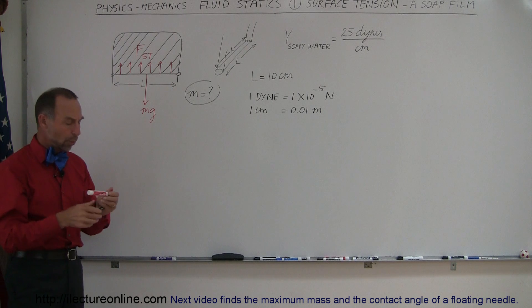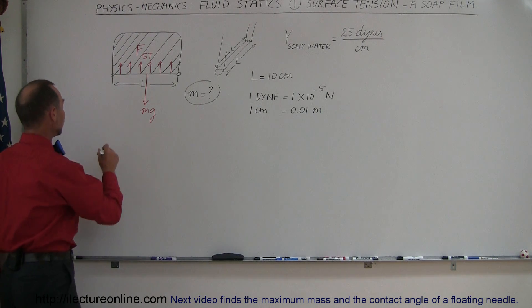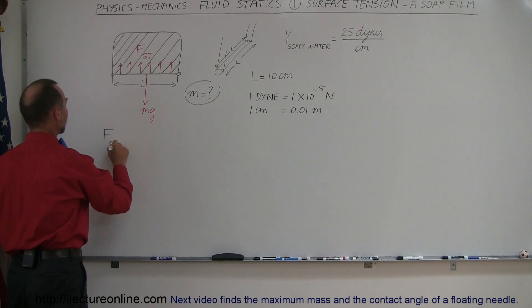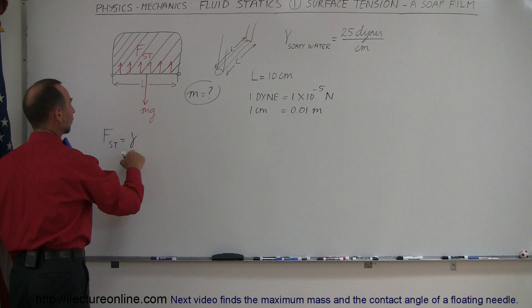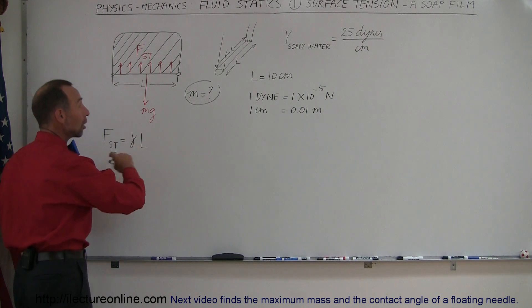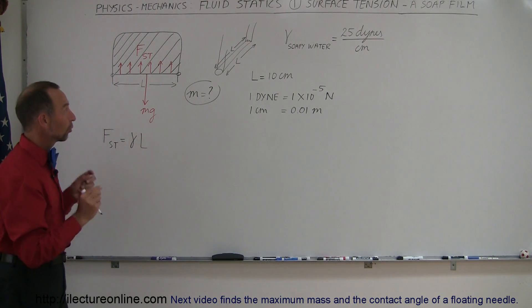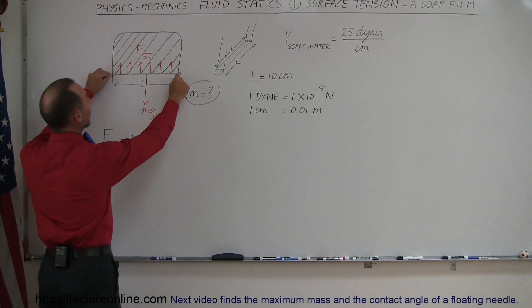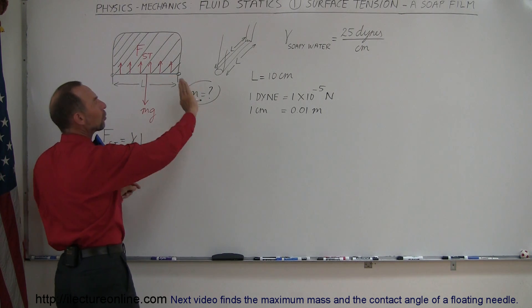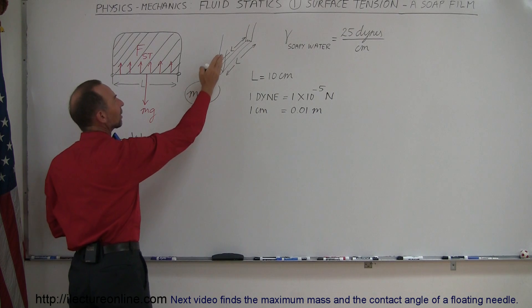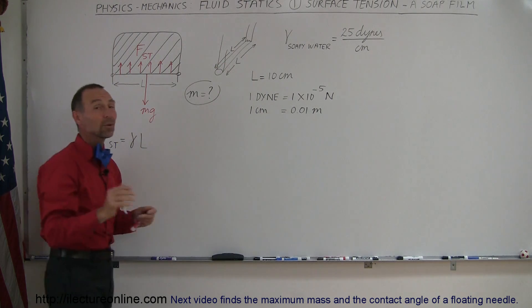Okay, now the equation that we use for surface tension is the force caused by the surface tension is equal to the coefficient of surface tension times the length along which this acts. And of course in this particular case if you have a wire like that and we kind of take a cross-sectional view of the wire, you can see that the soapy film has a certain thickness to it